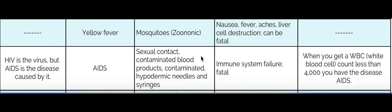Some of the symptoms with yellow fever were nausea, fever, and feeling really achy. They got jaundiced — that means they got yellow. The whites of their eyes turned yellow because there was liver cell destruction, and very often it was fatal.